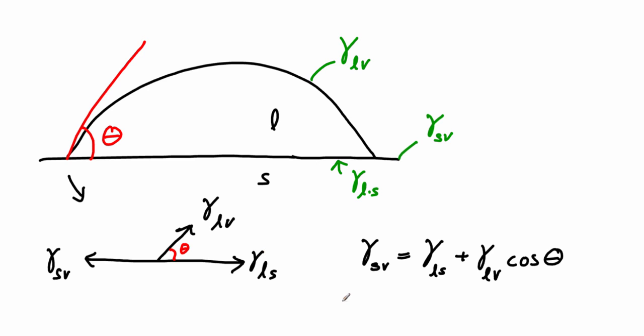We can solve this for the cosine of theta. You can see the cosine of theta is a difference: gamma solid vapor minus gamma liquid solid all over gamma liquid vapor.